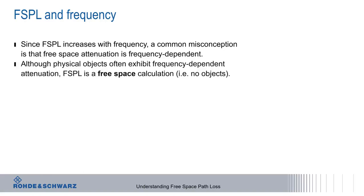And while it's true that many physical objects, including air, will attenuate signals in a frequency-dependent way, free space path loss is a free space calculation, which assumes there are no objects, including air, between the transmitter and receiver. So, why is free space path loss frequency-dependent?